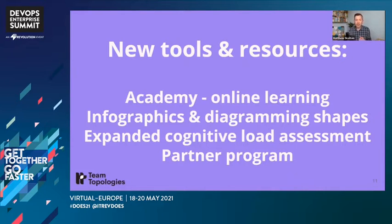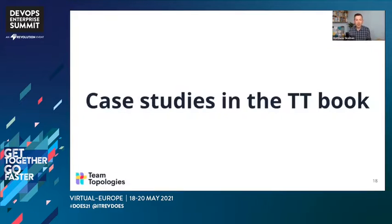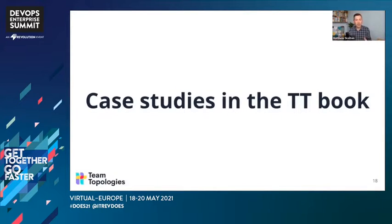Let's have a quick look at who's using Team Topologies. Of course we've got the case studies in the book — companies like Adidas, Ericsson, OutSystems, IBM, USwitch, and TransUnion, and many more.